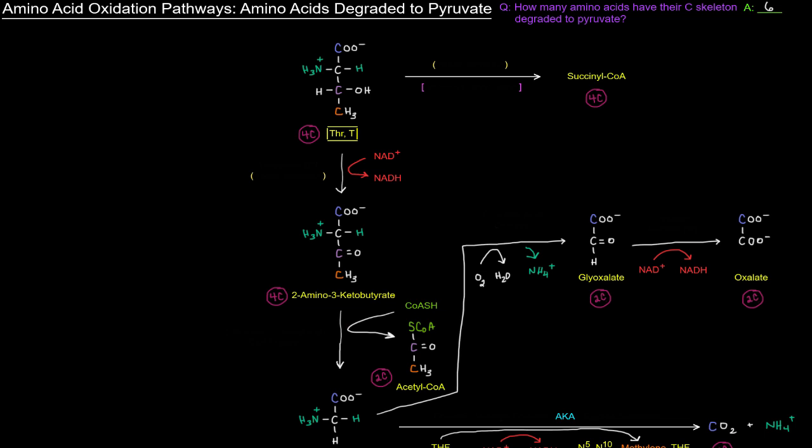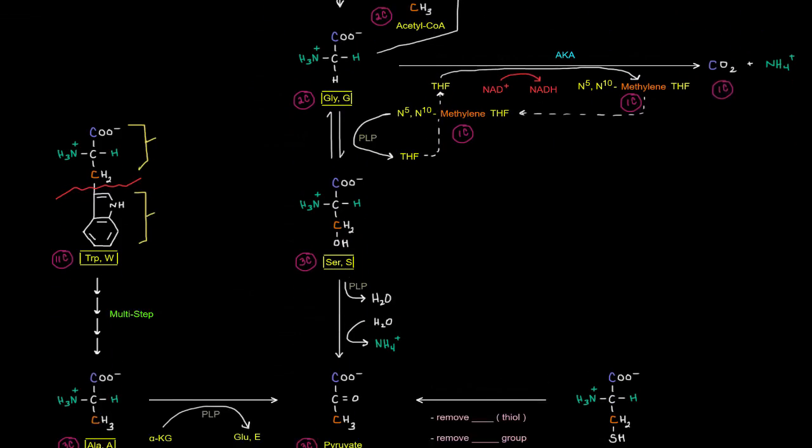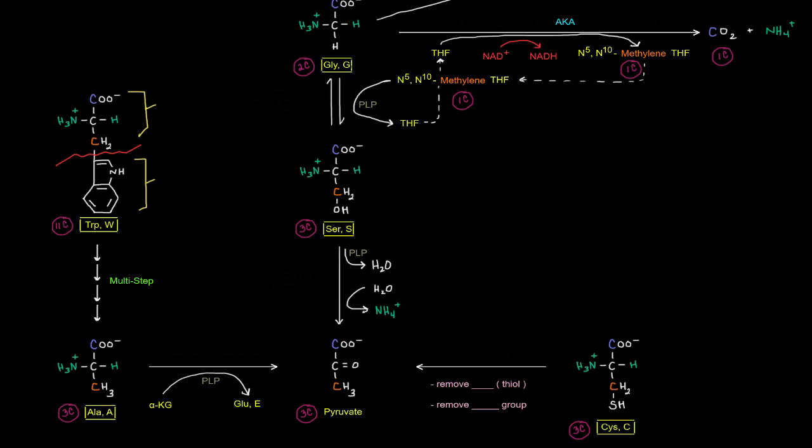There are six of them. And they are threonine, that's one, glycine, that's two, serine, three, tryptophan, four, alanine, five, and cysteine, six.